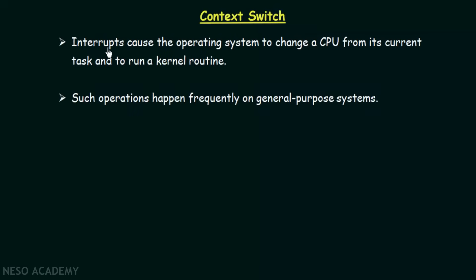Interrupts cause the operating system to change a CPU from its current task and to run a kernel routine. Such operations happen frequently on general purpose systems. When processes are being executed, if an interrupt occurs or if a process of higher priority comes, then that particular process has to stop its execution and allow the process causing the interrupt to execute first, after which the previous process can resume.